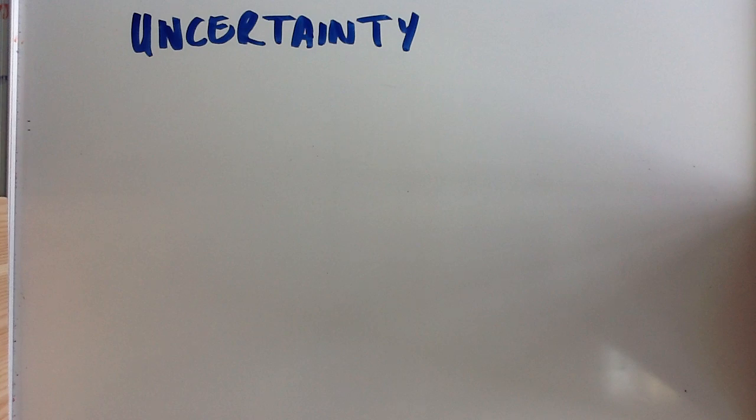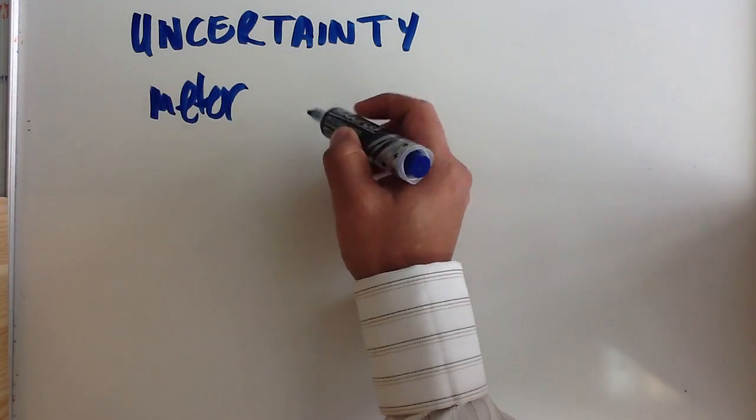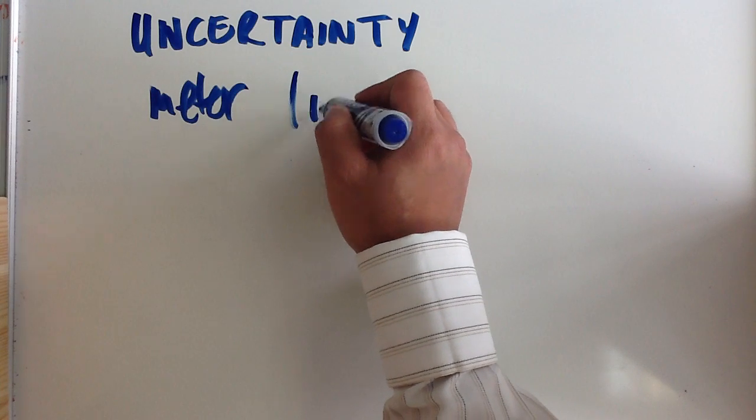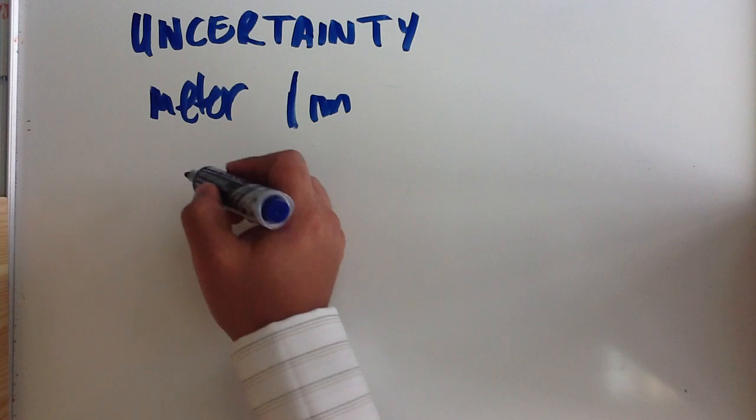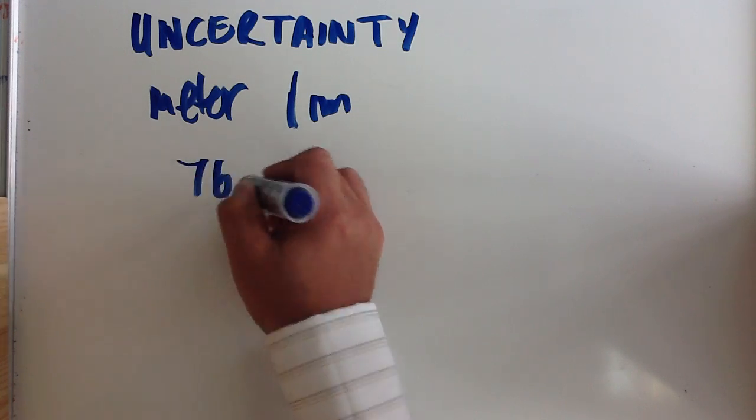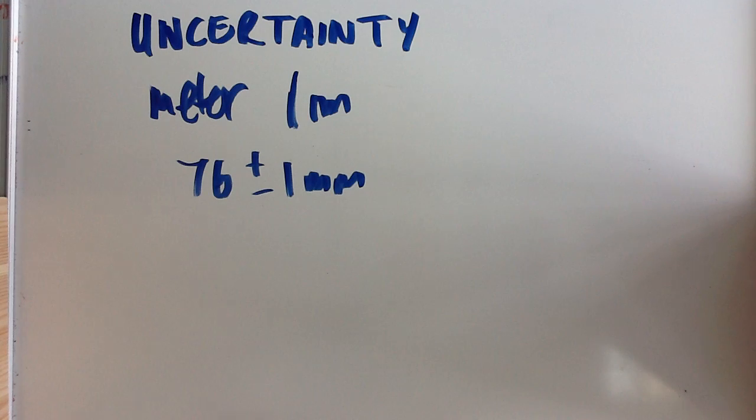First of all, absolute uncertainty is the measurement of your instrument that you're using. So if you're using a meter rule, the absolute uncertainty will be 1 mm. So if you've got a reading of 76, it'll be plus or minus 1 mm as your absolute uncertainty.